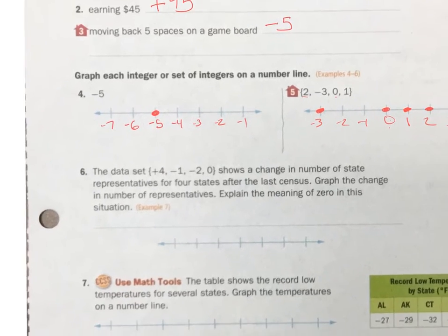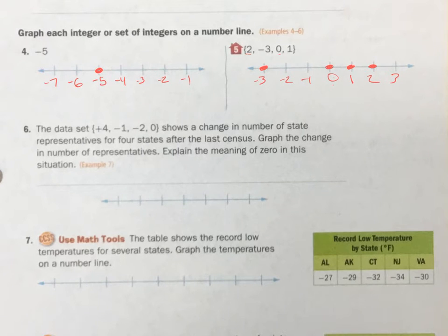Graphing, not too bad, hopefully, for you. All right, here's a data set. Plus 4, negative 1, negative 2, 0. Shows the change in the number of state representatives for 4 states after the last census. We want to graph this.